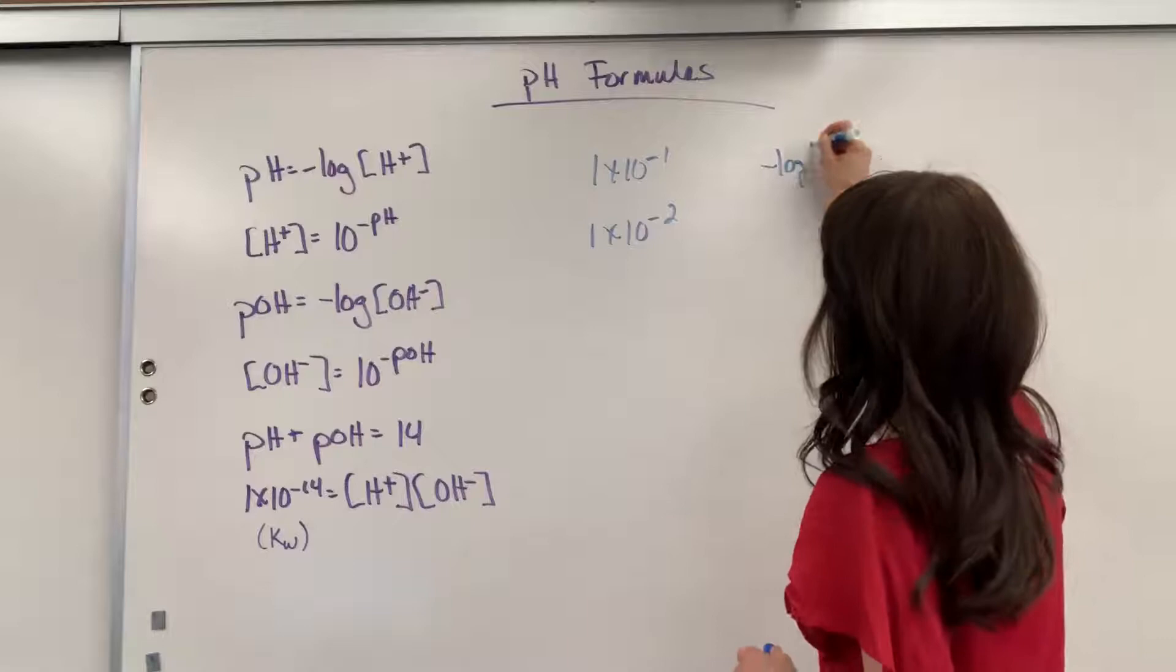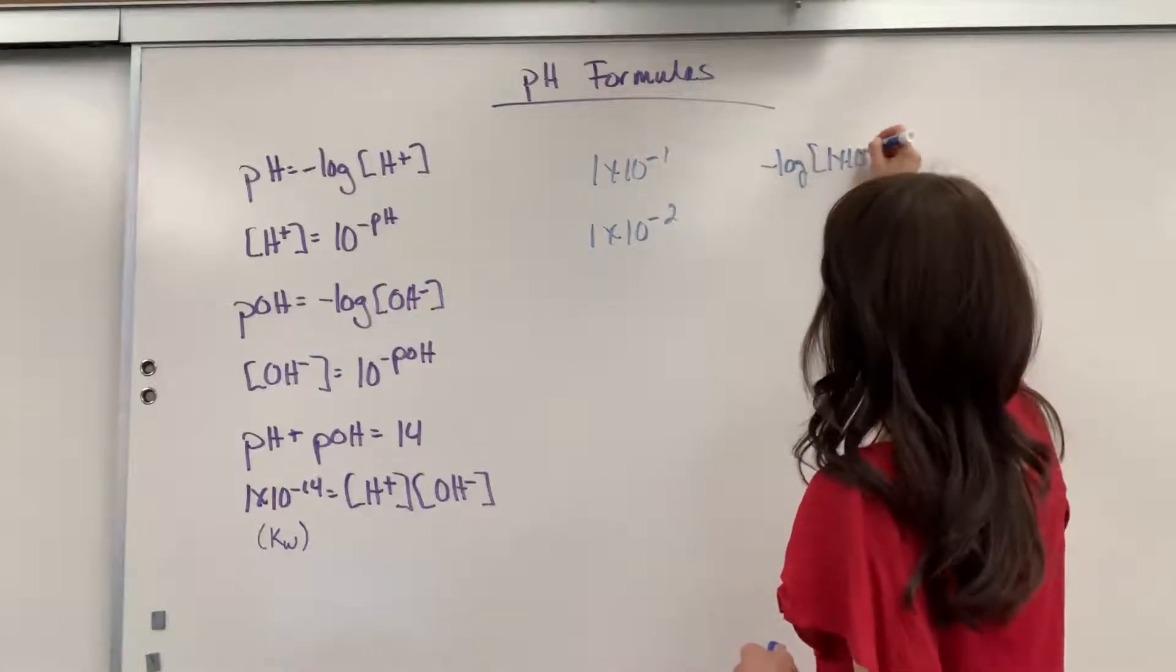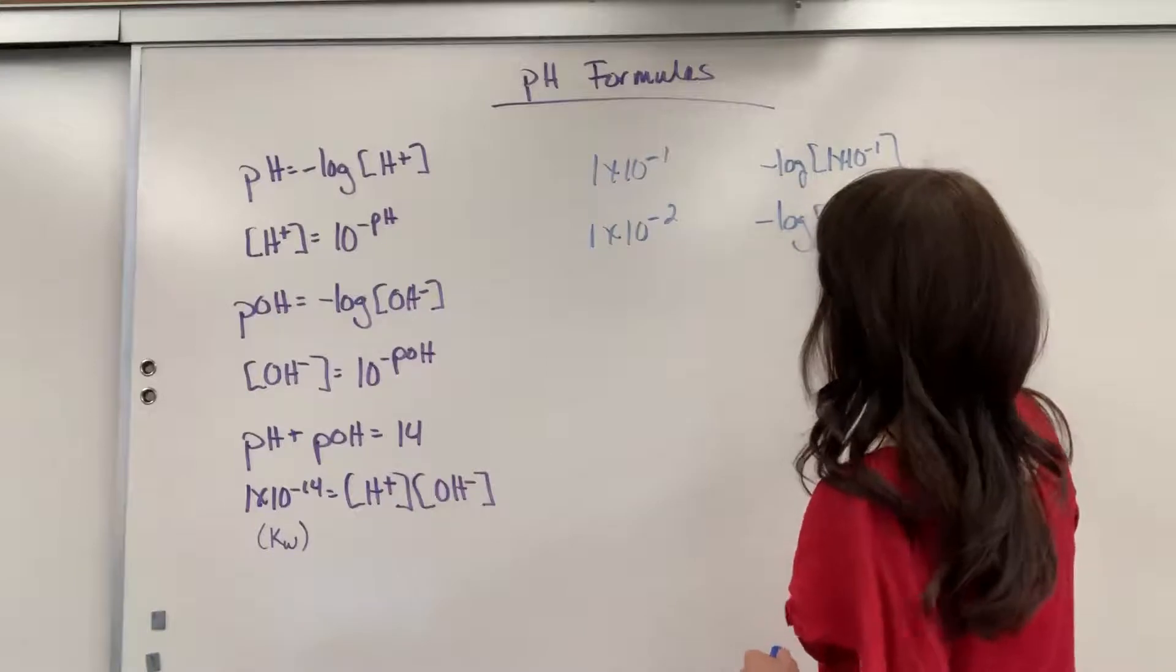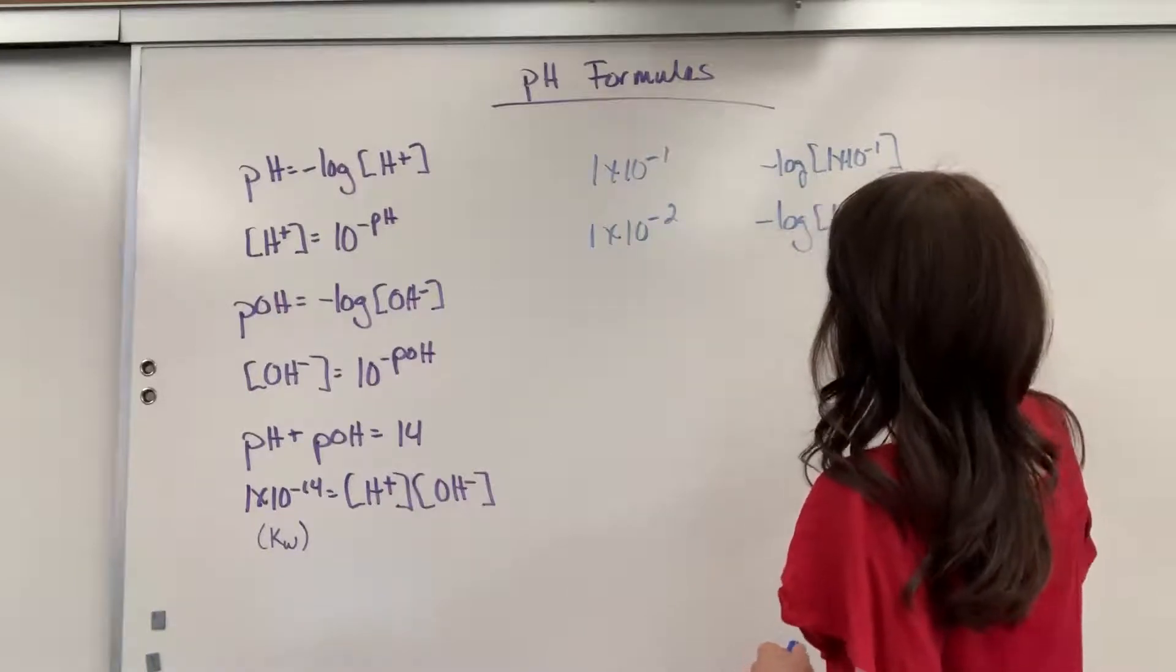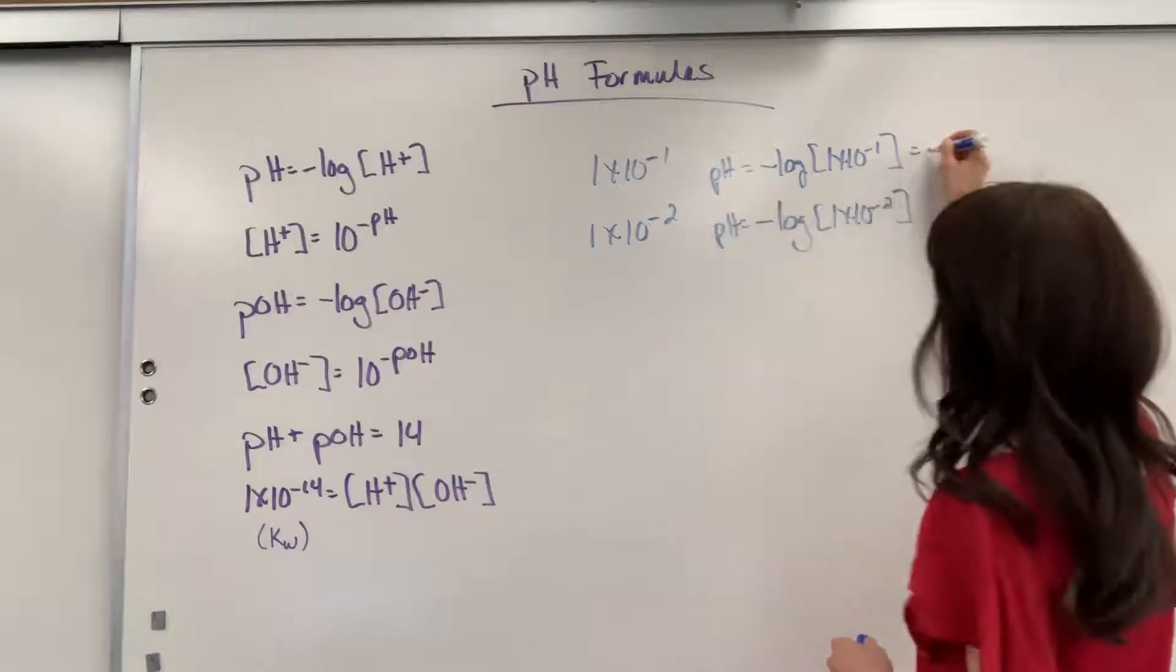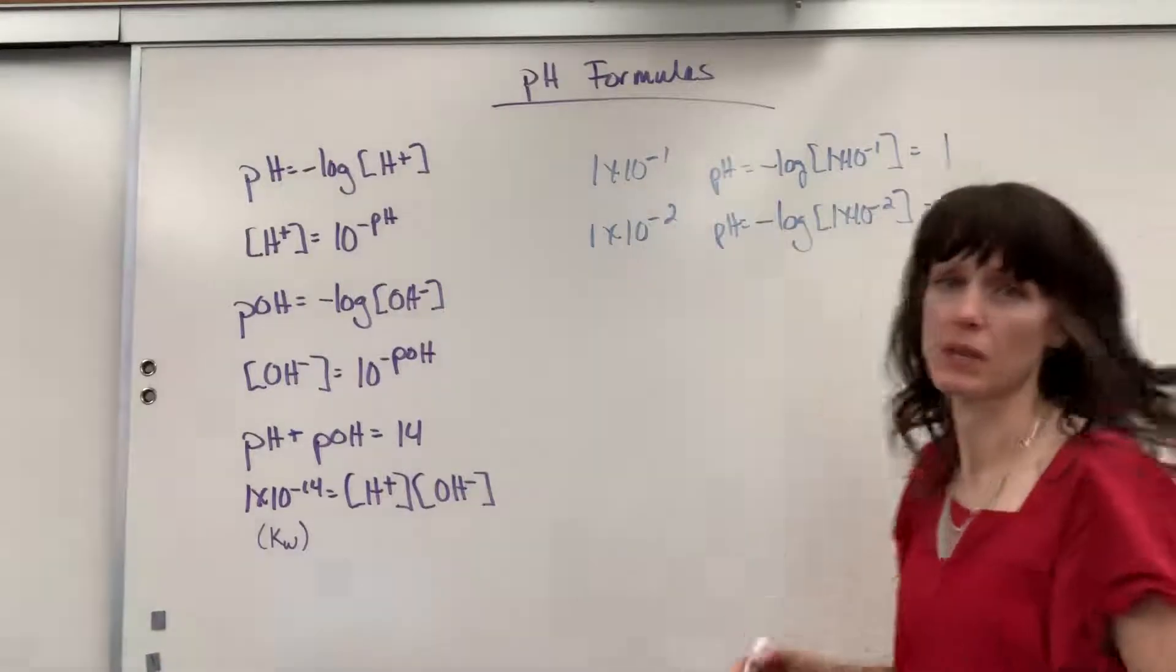so let's do negative log of 1 times 10 to the minus 1, compared to negative log of 1 times 10 to the minus 2. Remember, this is the pH. You might find the pH in each of these. I get a pH of 1 and a pH of 2.